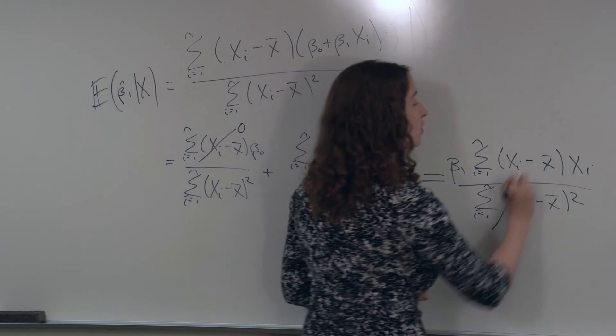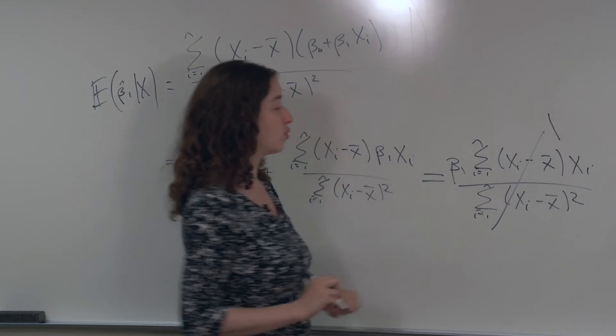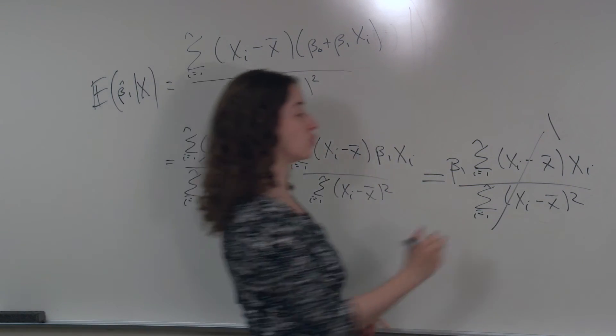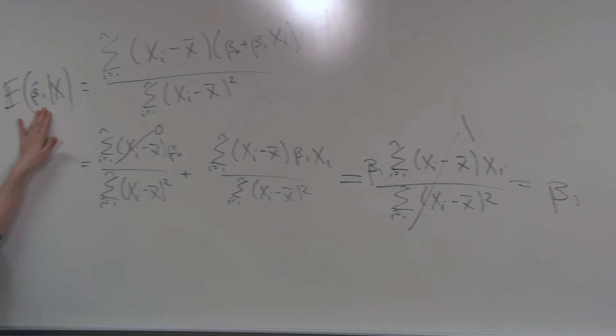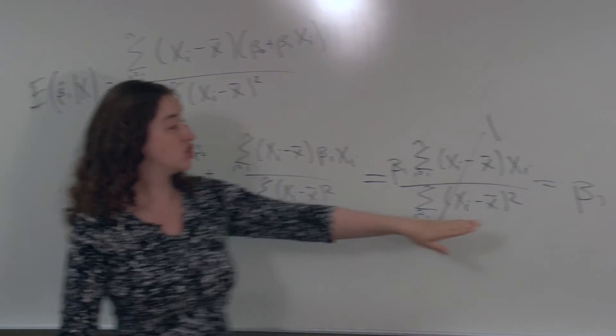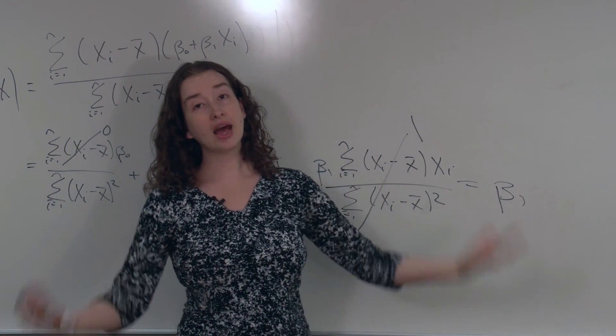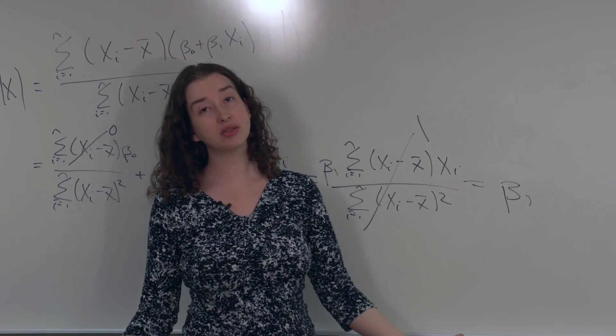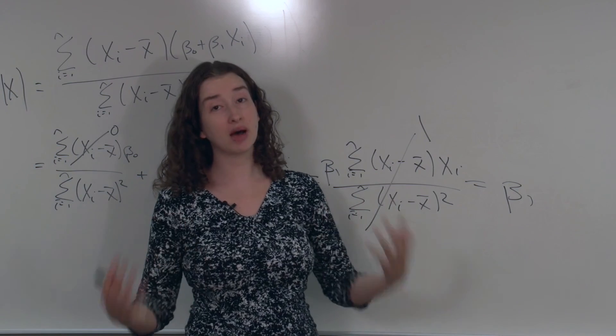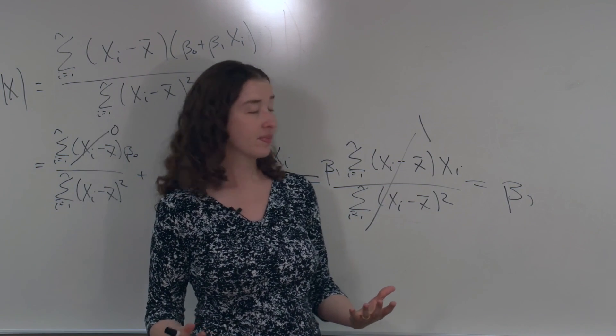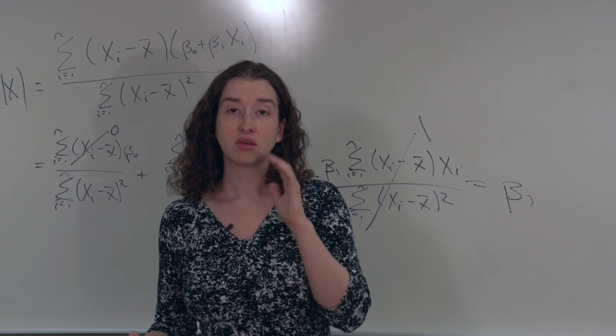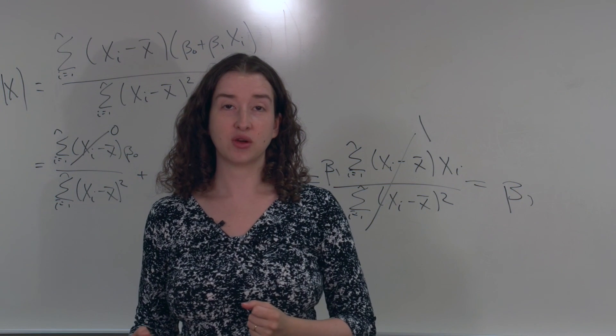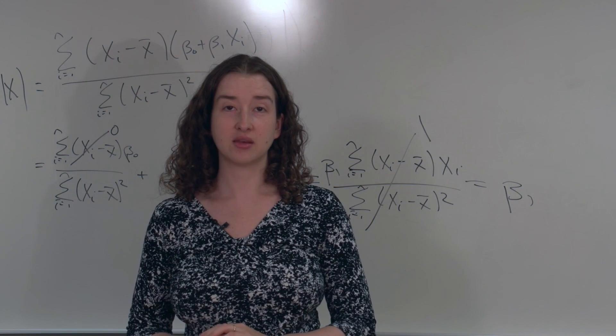In other words, this whole expression here is equal to 1. This whole thing says beta 1 times 1. In other words, the expected value of beta 1 hat given x is just beta 1. On average, over all possible samples, given the normal model that we've specified, the estimated slope coefficient will be the true slope coefficient. We've demonstrated that beta 1 hat is unbiased.